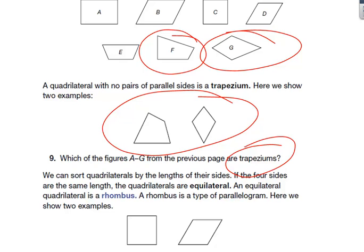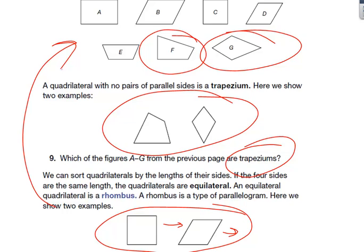We can sort quadrilaterals by the lengths of their sides. If all four sides are the same length, the quadrilateral is equilateral. An equilateral quadrilateral is a rhombus. A rhombus is a type of parallelogram. You take a square and kind of shove it over and it still has equal sides — it just slants. Which of these figures are rhombuses? C and D.